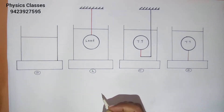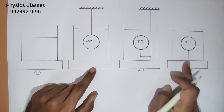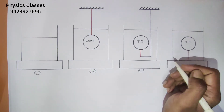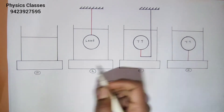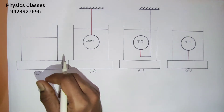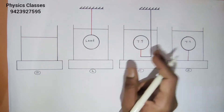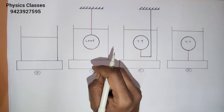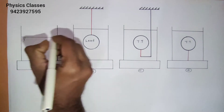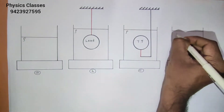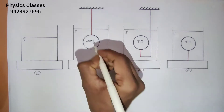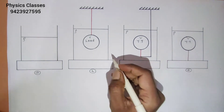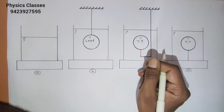We have to compare the weights read by the weighing machines. The volume of all three balls is the same. Let us see how much buoyant force is acting on the balls due to the surrounding water. Let rho be the density of the water and V be the volume of all three balls. The buoyant force acting on all of them will be the same, in the upward direction.